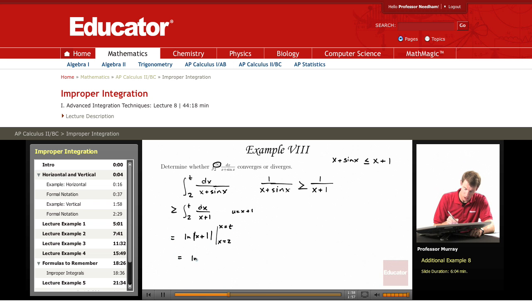And that's the natural log of t plus 1 minus the natural log of 2 plus 1. And we want the limit as t goes to infinity. So this is the natural log of infinity, which is infinity, minus natural log of 3, which is just a finite number. So this diverges to infinity.